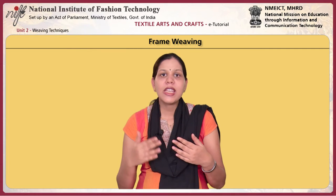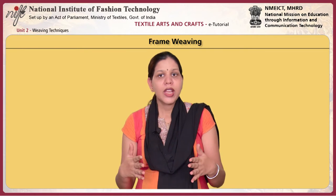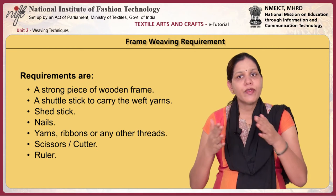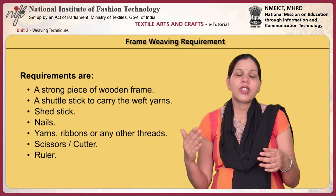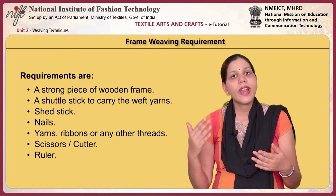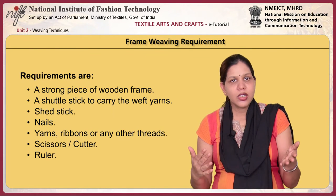One of the next simplest forms of weaving is frame weaving. During frame weaving, the warp yarns are wound onto nails at each end of the frame and the weft is woven with a shuttle. A wide range of fabrics can be woven with a frame, such as plain or tabby weaving and tapestry weaving. However, the length and width of the woven fabric is dependent upon the size of the frame. The requirements for frame weaving are a strong piece of wooden frame, a shuttle stick to carry the weft yarns, a shed stick, nails, yarns, ribbons or any other threads, scissors or a cutter and a ruler.